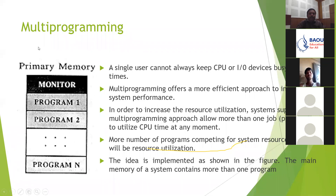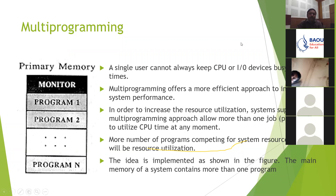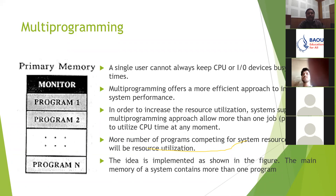Multiprogramming offers a more efficient approach to increase system performance. It allows more than one job to be in memory simultaneously. Nowadays you can have Word, Excel, and PowerPoint open at the same time — earlier this was not possible. In multiprogramming, more programs competing for system resources means better resource utilization. We can use the same resource for all users, and main memory contains more than one program.